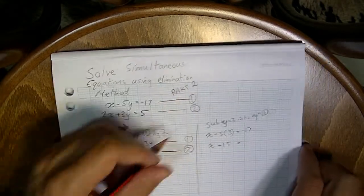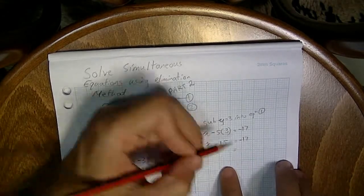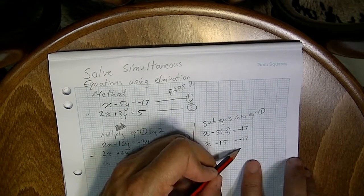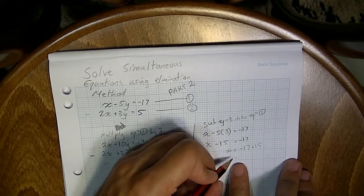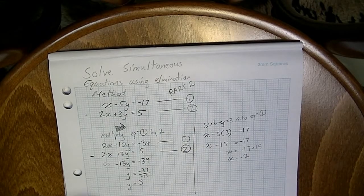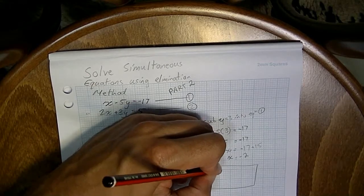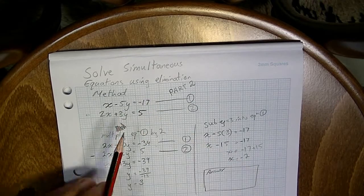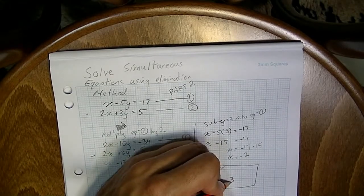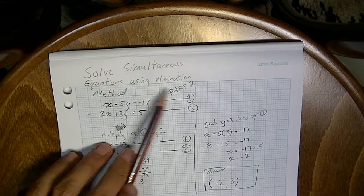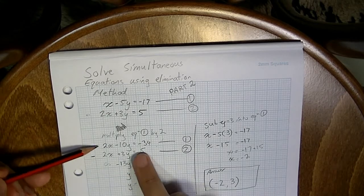5 times 3 is 15, so x minus 15 equals negative 17. Moving the negative 15 over gives x equals negative 17 plus 15, which means x equals negative 2. Don't forget, you need to finish by stating the solution. The point that satisfies both equations is x equals negative 2, y equals 3. That's solving simultaneous equations using the elimination method where you multiply one equation to allow elimination.